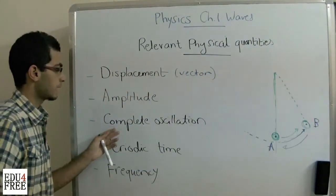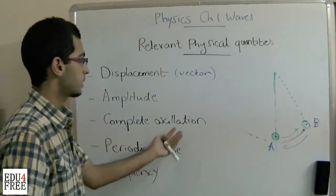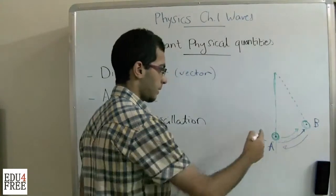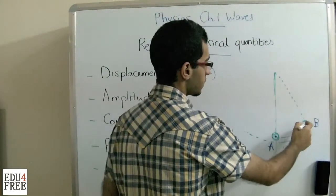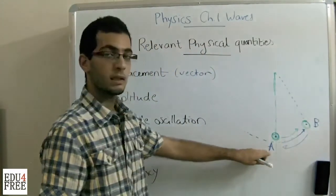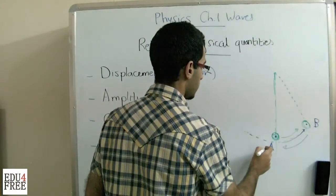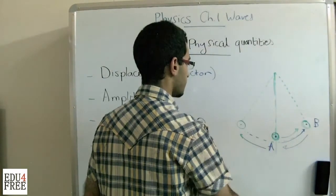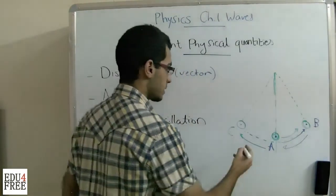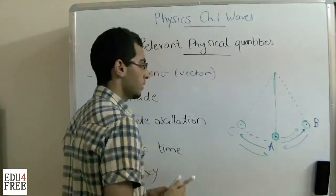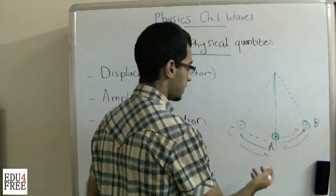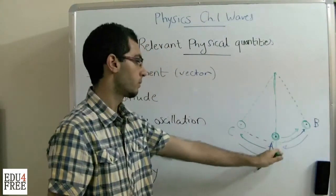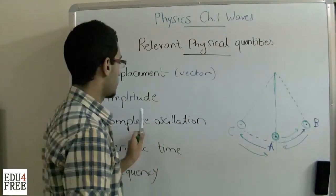The third physical quantity is the complete oscillation. We said that the pendulum moved from A to B, then it returns from B to A — the movement is not completed yet. It's supposed that it moves from A to the other direction, say, to point C, then returns to A. So it moves: A to B, B to A, A to C, and C to A — returning to its equilibrium position. This is called a complete oscillation.